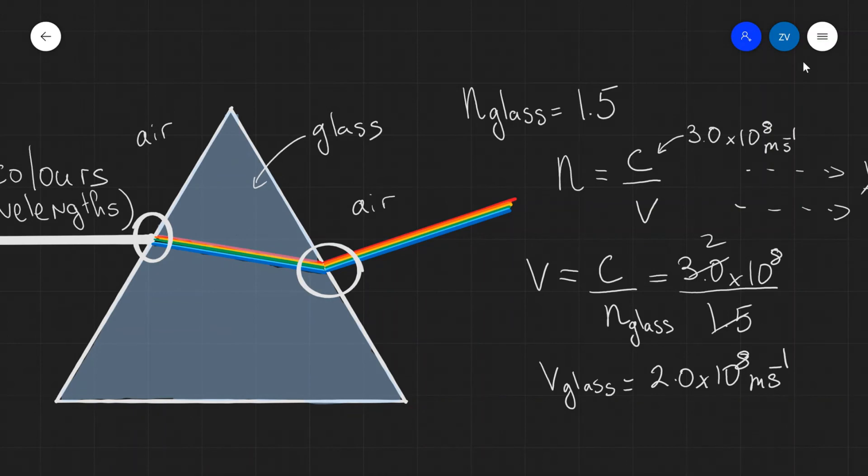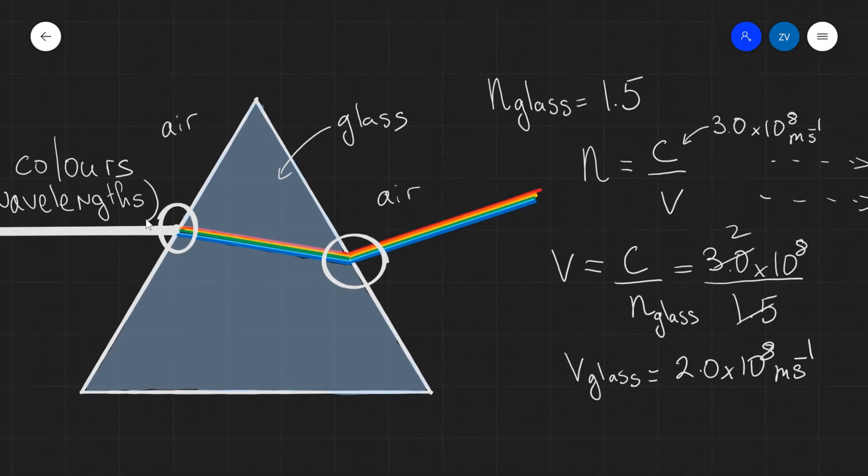Just to recap what we've learned so far, whenever light passes from one medium to another medium, it can change its direction and speed. This phenomenon is known as refraction. The refractive index is defined as the ratio of the speed of light in a vacuum to the speed of light in that particular substance. And we can use this formula to calculate the speed of light in any medium that we know the refractive index of.